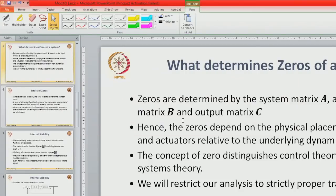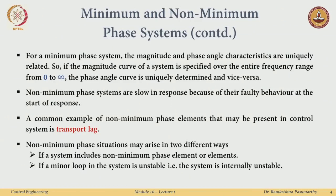Let us revisit some slides from last time. In this lecture we will be interested in non-minimum phase zeros — zeros in the right half plane. We discussed how to distinguish between minimum phase and non-minimum phase via the Bode plot. We concluded that if the system is minimum phase, the magnitude response uniquely determines the transfer function. Non-minimum phase systems are slow in response because of faulty behavior at the start. A common example is transport lag.